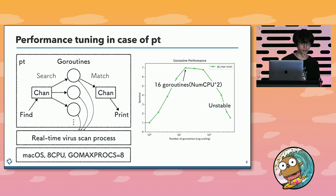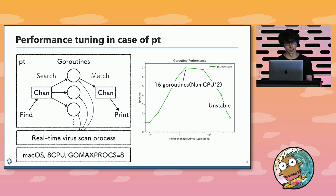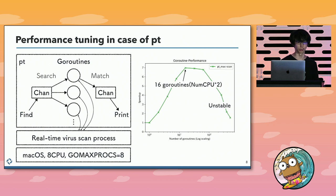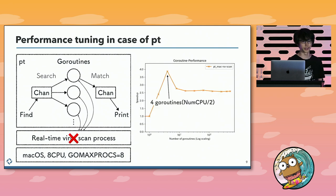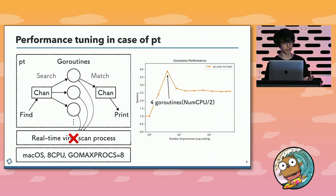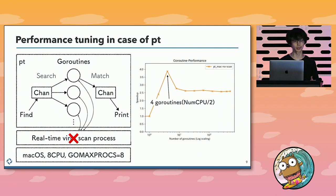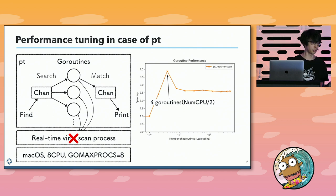Because in this environment, the real-time virus scan process was running at the same time. The process makes the system call of opening files slow and consumes CPU resources. As a result, performance is degraded when searching for many files at the same time. Besides, there are other results: when the real-time virus scan process stops, 4 goroutines made performance good — half the number of CPUs. I don't know the optimal number of goroutines.